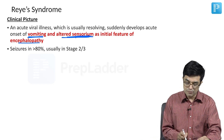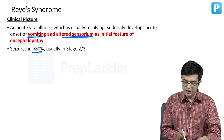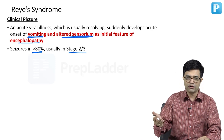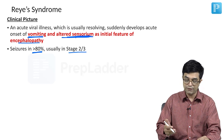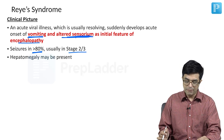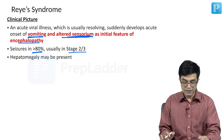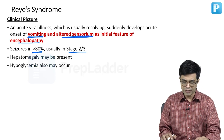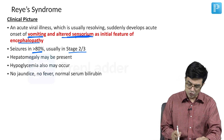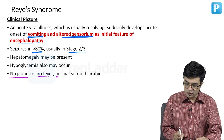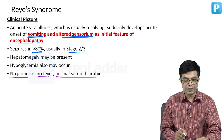Seizures will occur in more than 80%, usually in stage 2 and 3. Stages of Reye's syndrome will be discussed in some time. Hepatomegaly may be present. Hypoglycemia also may occur. There will be no jaundice, no fever, and normal serum bilirubin.